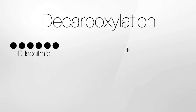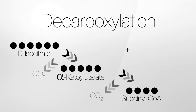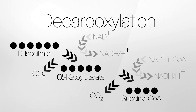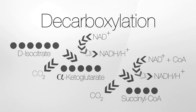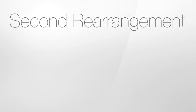In the third stage, isocitrate is converted to succinyl-CoA via alpha-ketoglutarate, a 4-carbon carboxylic acid, and two molecules of carbon dioxide. At the same time, two molecules of NADH are produced.